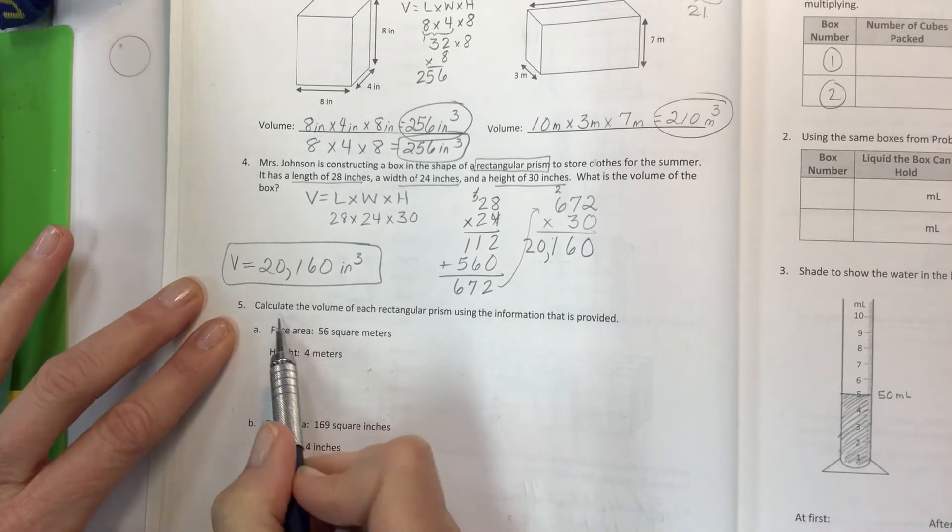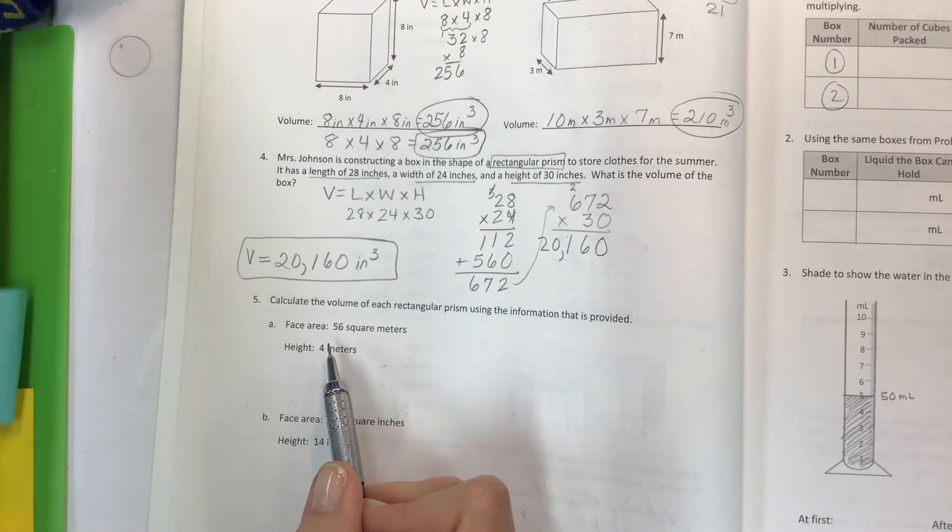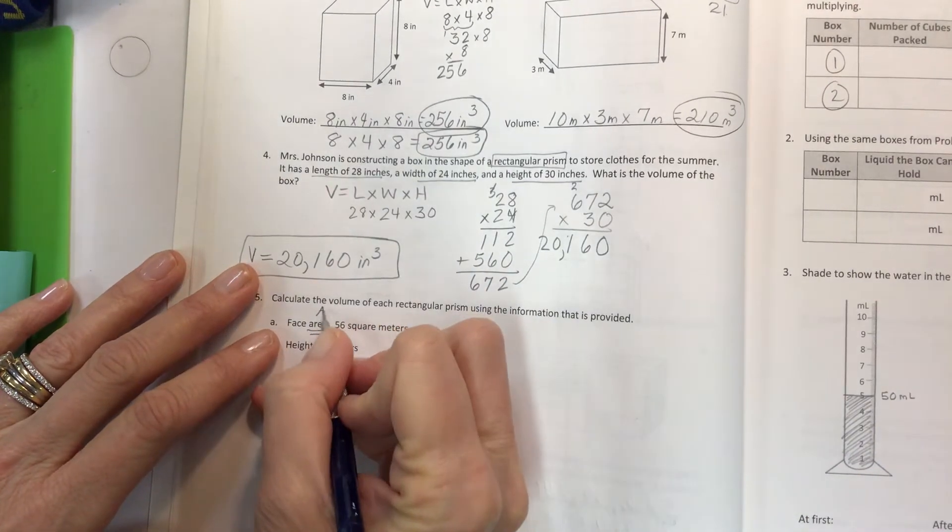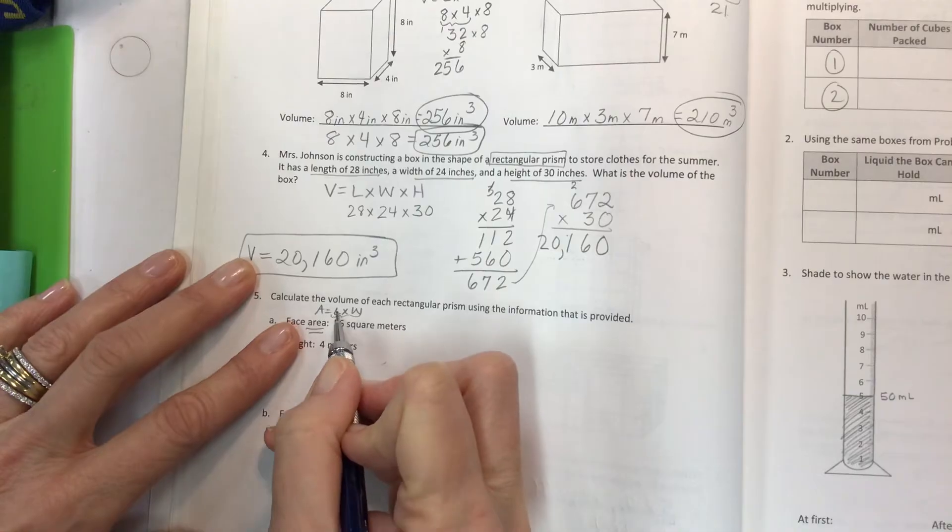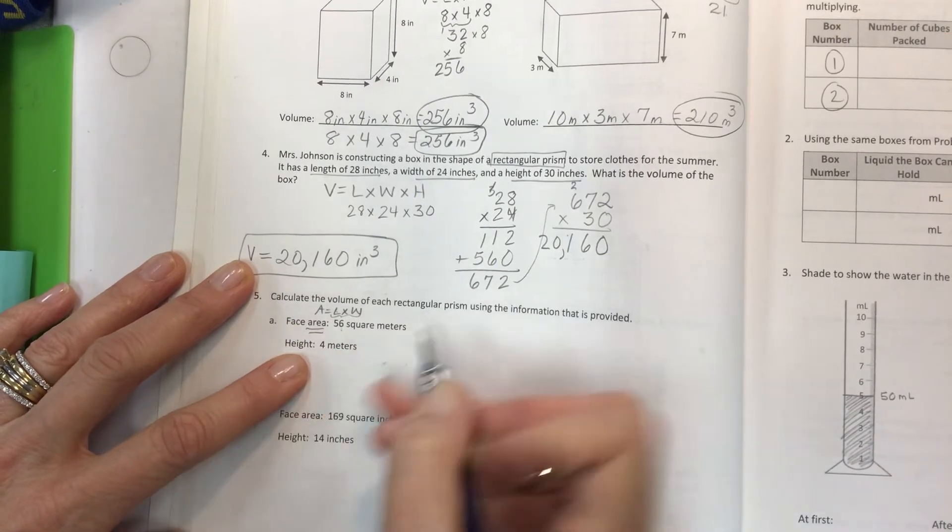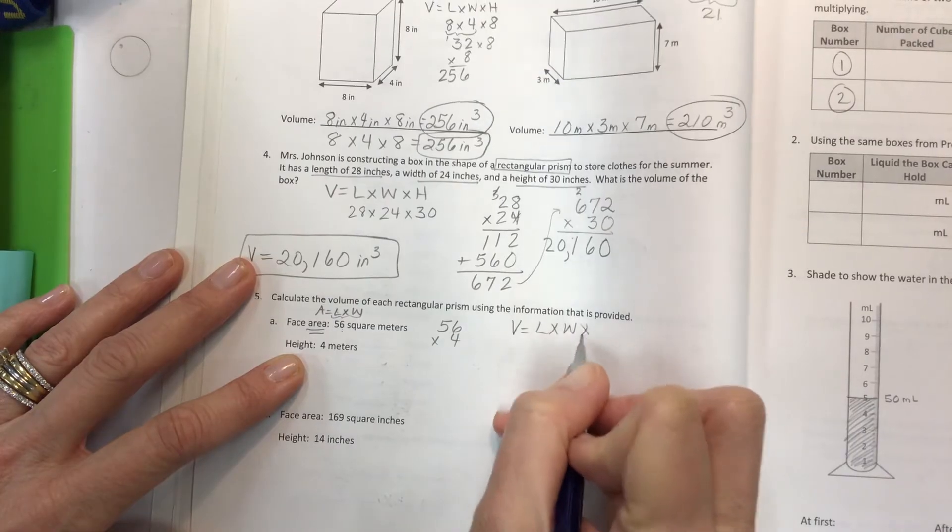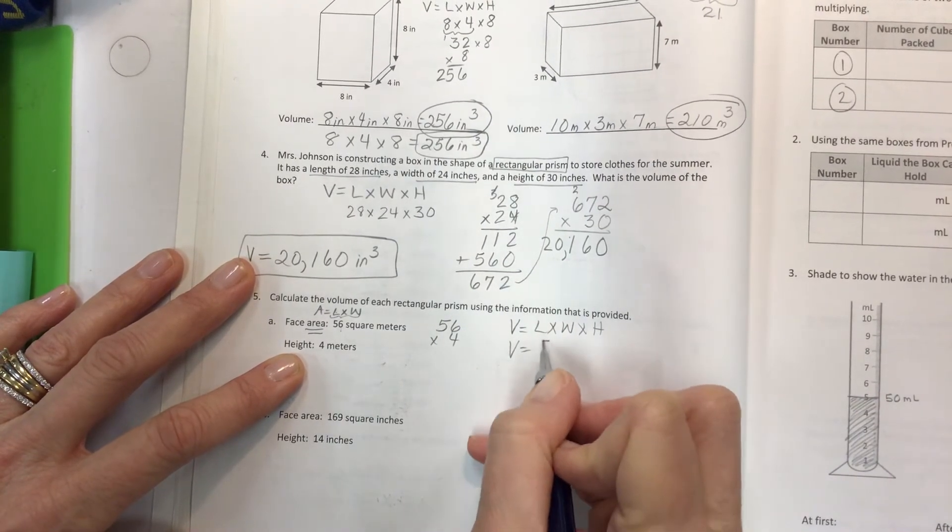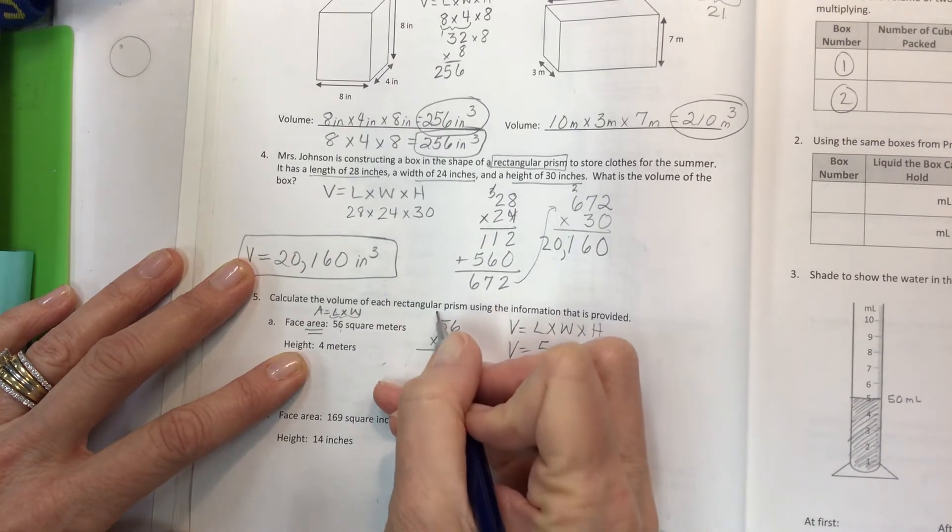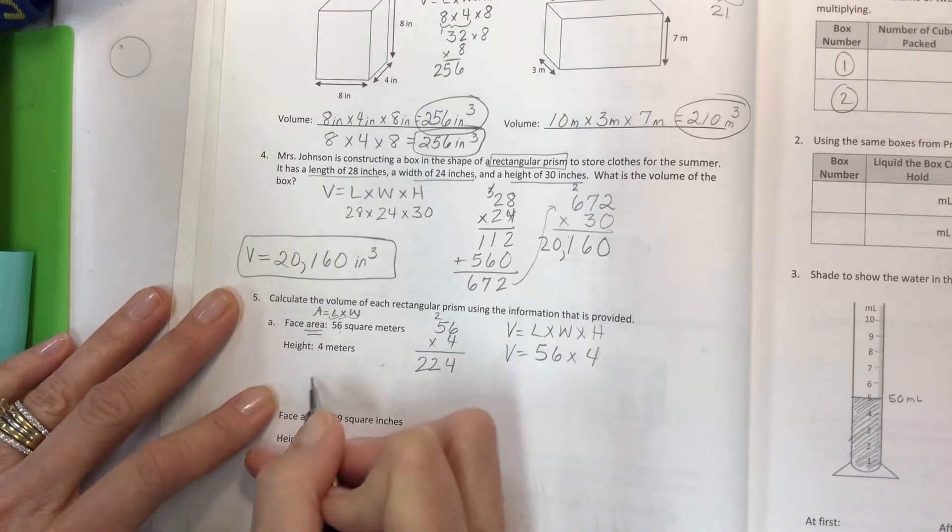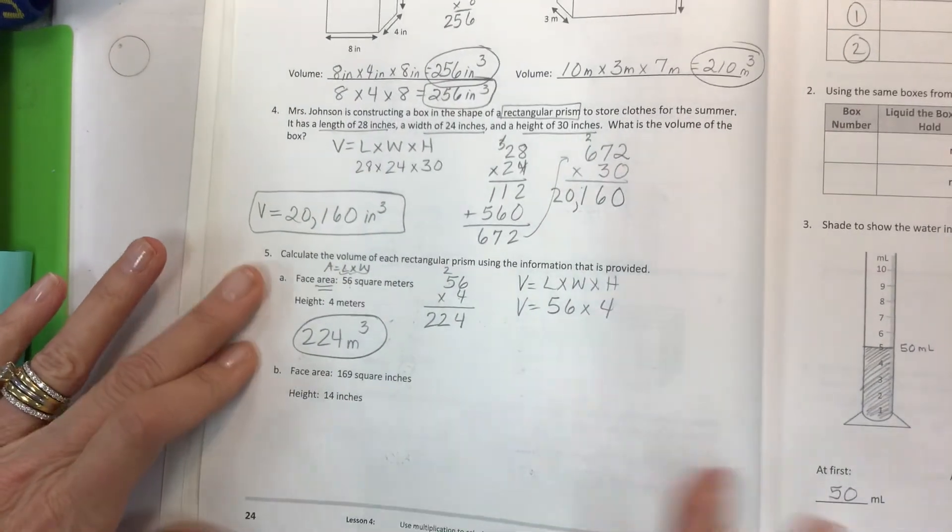Last one. Isn't that quick? Calculate the volume of each rectangular prism using the information that is provided. The nice thing that they do when they give you the face or base area, if they've given you the area, area is length times width. So they already multiplied for you to get one of those numbers. Okay. So they took this and this and multiplied it and got the answer. Now you just have to multiply 56 times 4. Okay. Because the volume is the length times the width times the height. They're telling you that the length times the width is 56. You just need to multiply by the height. So set it up with the standard algorithm. 6 times 4 is 24. And we have 20, 22. So 224. Label exponent. Hopefully you got 224 meters cubed.